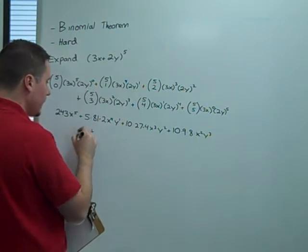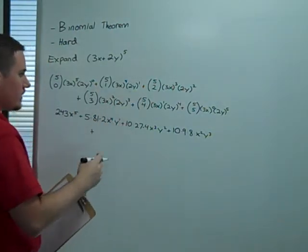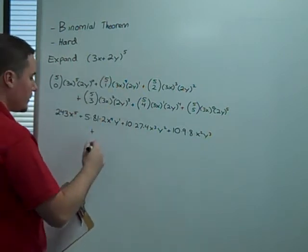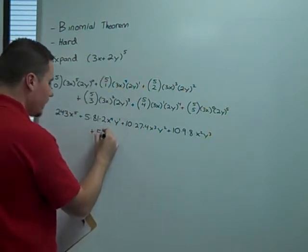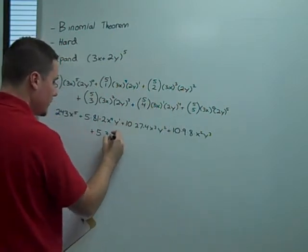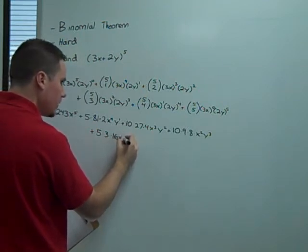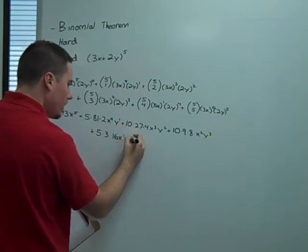Again, same problem, new line. 5 choose 4 is the same as 5 choose 1, which is 5. Times 3x. Actually, just the 3. 2 to the fourth is 16. x to the first. y to the fourth.